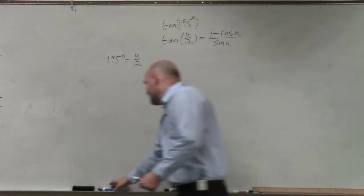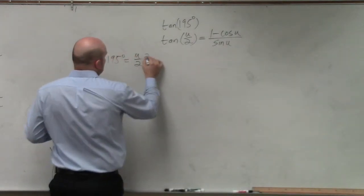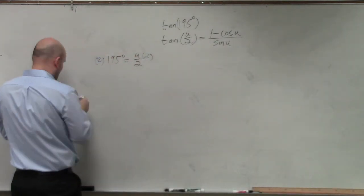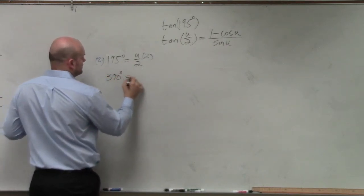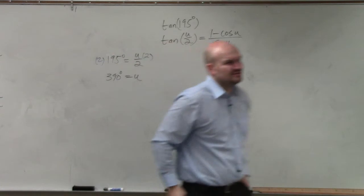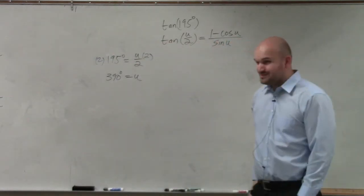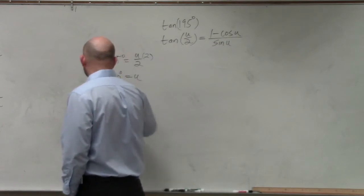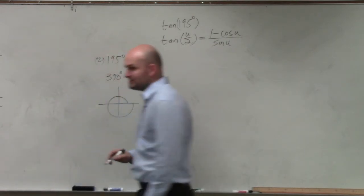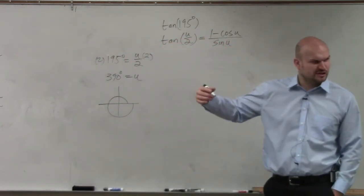You've got to solve for u. So you'd multiply by 2 on both sides and you obtain 390. 390 degrees. That is a big angle. Well, let's think about really how big 390 degrees is. We know all the way around the circle is 360. So how much farther do we need to go to get to 390?